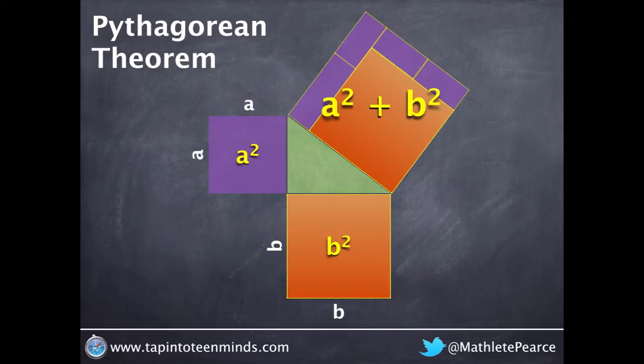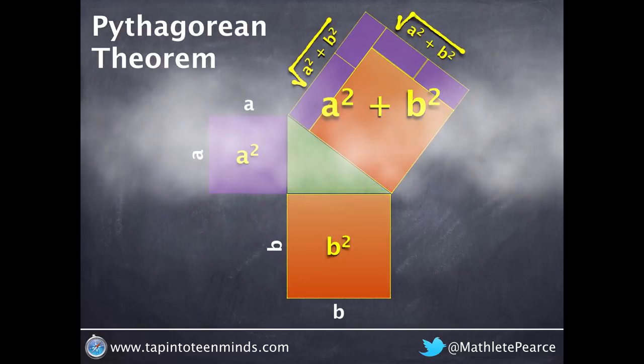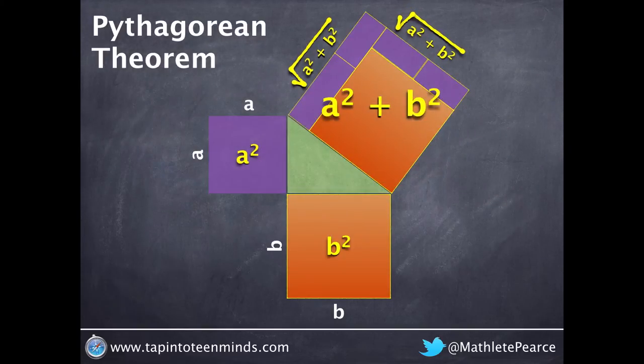Since we're not interested in what the hypotenuse squared is equal to but rather what the length of the hypotenuse is equal to, we must square root a squared plus b squared to determine the actual side length for the hypotenuse.